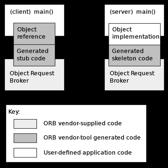The Common Object Request Broker Architecture is a standard defined by the Object Management Group designed to facilitate the communication of systems that are deployed on diverse platforms. CORBA enables collaboration between systems on different operating systems, programming languages, and computing hardware. CORBA uses an object-oriented model although the systems that use CORBA do not have to be object-oriented. CORBA is an example of the distributed object paradigm.